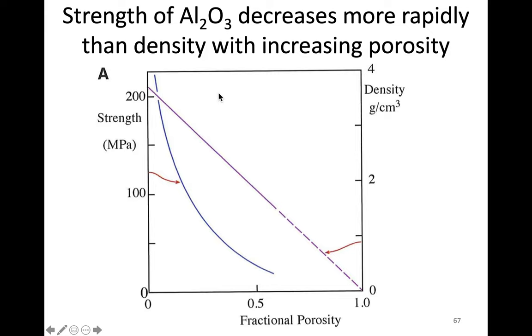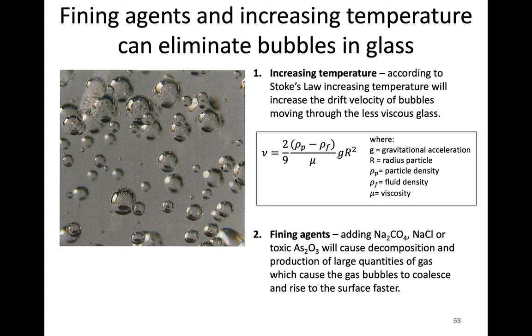The goal is that we can increase the strength of a material. In this case, I have Al₂O₃, but you can think the same way with glass. The strength goes up with the reduction of porosity. Here at zero percent porosity versus if we have a lot of pores, the strength goes down. You can think of pores and bubbles as kind of the same idea.